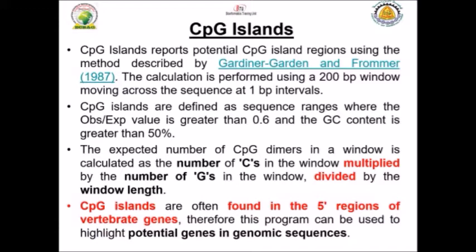This program uses the method described by Gardner, Gard and Frommer 1987. It calculates using a 20 base pair window moving across your sequence at one base pair intervals. A CpG island is defined as a sequence region where the observation divided by expectation value is greater than 0.6 and the GC content is greater than 50%. The calculation is simply the number of C multiplied by the number of G, divided by the window length.